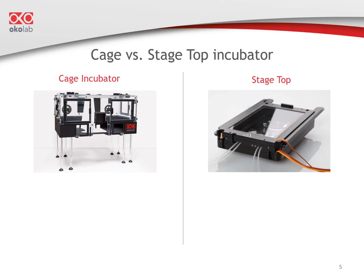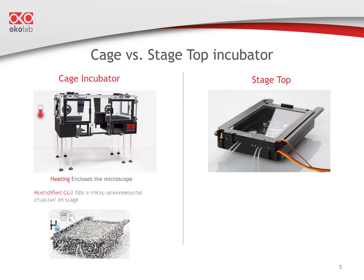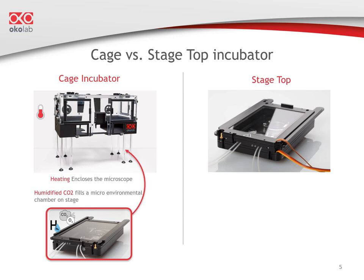In a cage incubation system, heating encloses the microscope. The stage, objective, and nose piece are located inside the enclosure at 37 degrees. To this, you add a microenvironmental chamber preventing humidified CO2 from dissipating. You place your sample inside this chamber and locate it on the stage in the enclosure at 37 degrees.